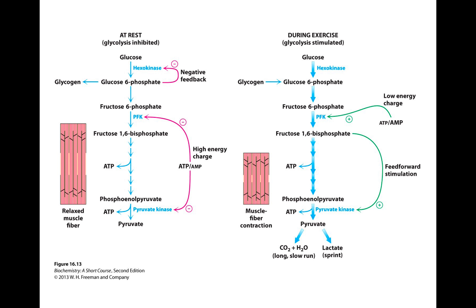During rest, we don't really need glucose, so glycolysis is inhibited. Relaxed muscles won't produce much pyruvate, and that's fine because we don't need the energy. During exercise, glycolysis is stimulated. High levels of AMP signal that we need more ATP, which activates the kinase and drives glycolysis. Additionally, high levels of fructose 1,6-bisphosphate upregulate this activity. This makes sense because during exercise you need lots of energy, so glycolysis is stimulated to break down glucose and generate ATP.